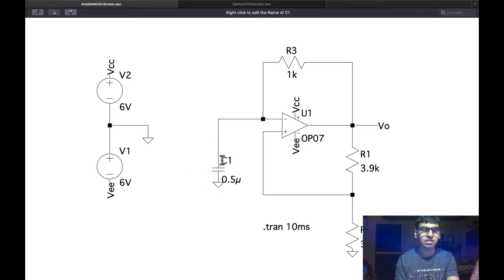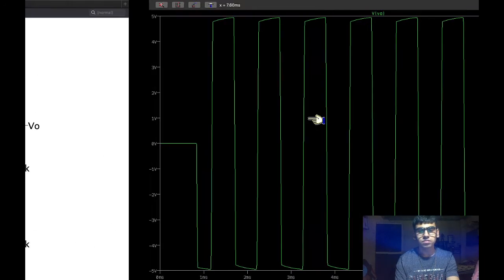Also, the C1 capacitor is involved in deciding the frequency of the output. We can check the output now. We get a square wave like this which is the expected output for astable multivibrator.